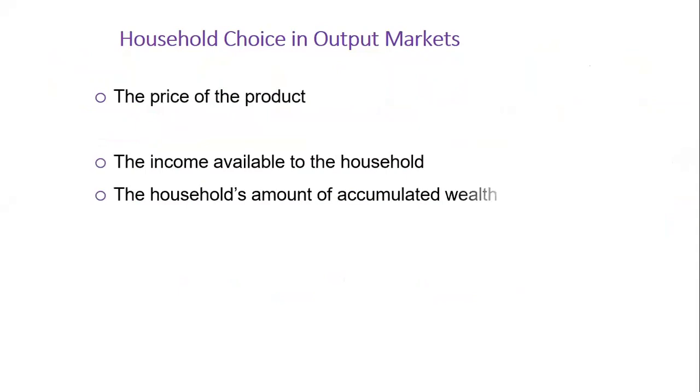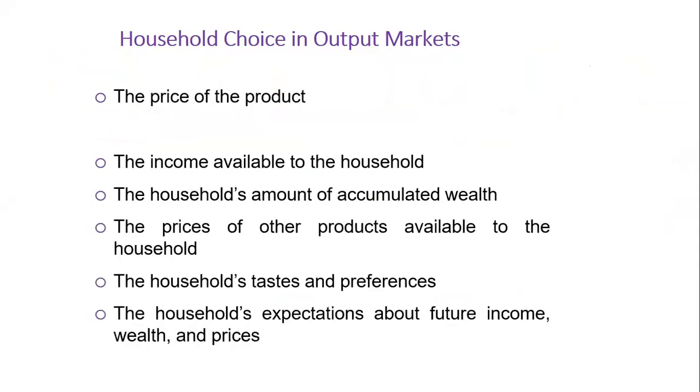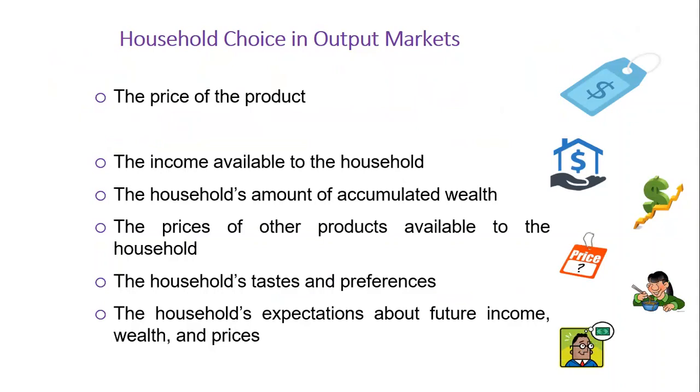As we saw in previous videos, several factors influence the quantity of a given good or service demanded by a single household. We have first the price of the product, and the law of demand states that there is a negative relationship between the price and quantity demanded. Also, we have other factors such as the income, the household accumulated wealth, the price of other products available to the household such as complementary and substitute products, also the household tastes and preferences, and the household expectation about the future.